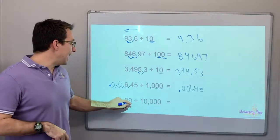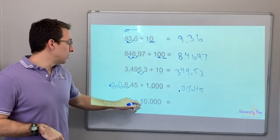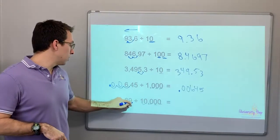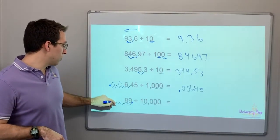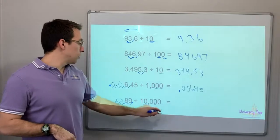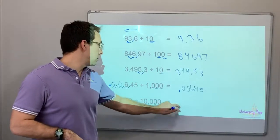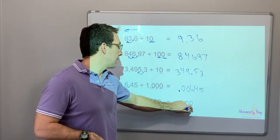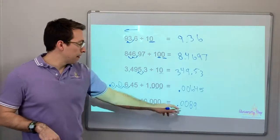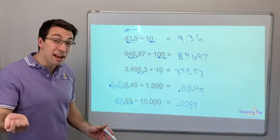All right. And then 89. Here's our decimal. 1, 2, 3, 4. So we have 0.0089, that's 89 ten-thousandths.